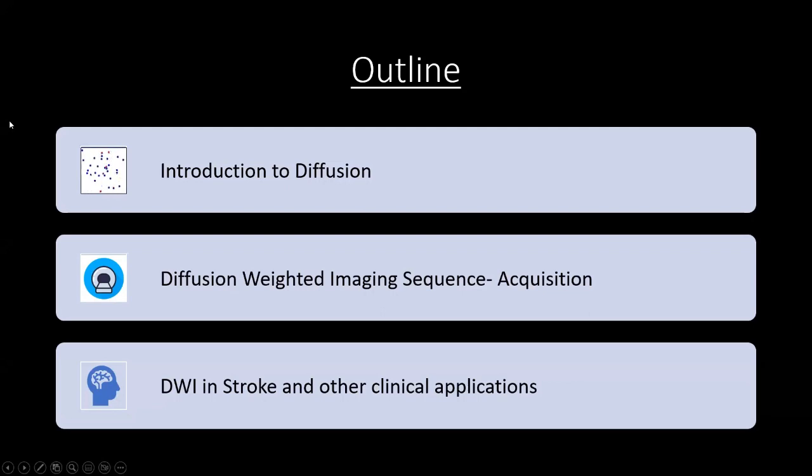I'll be explaining the concepts under these categories. First, introduction to diffusion and Brownian motion. Then how DWI sequence is acquired. And finally, some of the clinical applications.